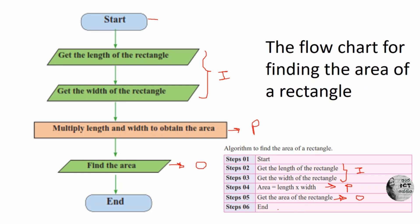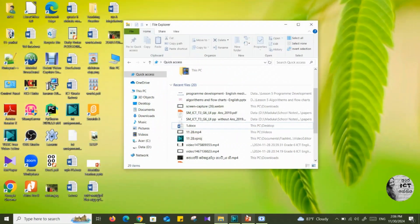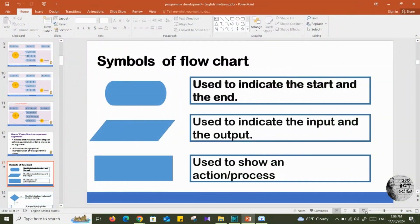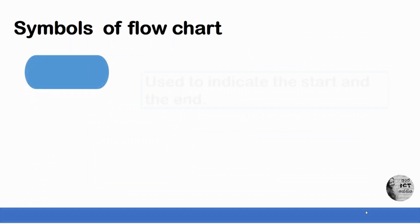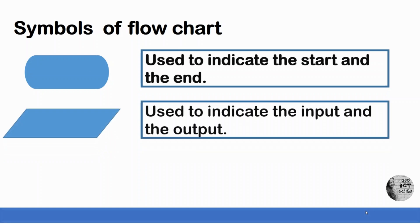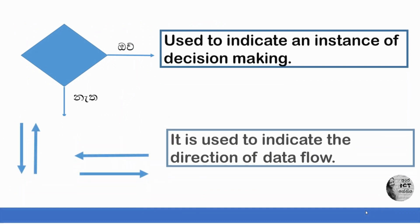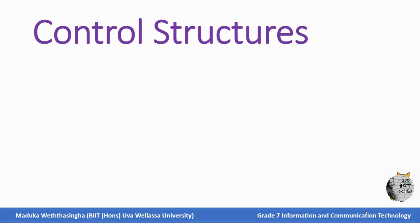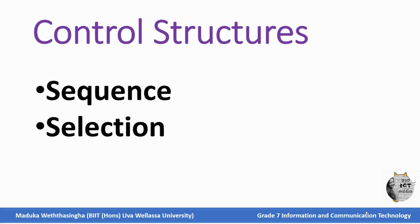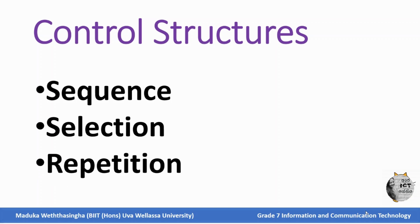Now in grade 7 we are going to learn these things more deeply. Your next subtopic is control structures. In grade 7, you have to learn about control structures — there are three control structures. Let's learn about control structures in another video.